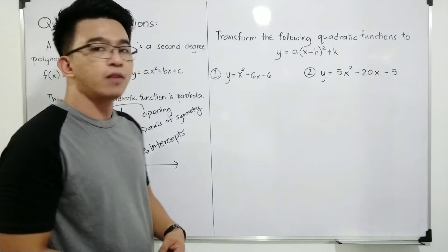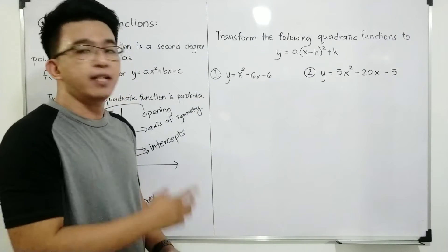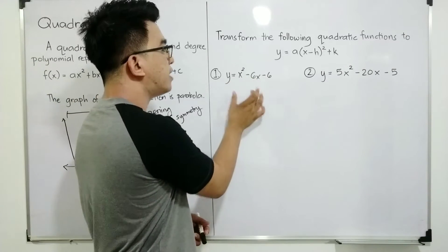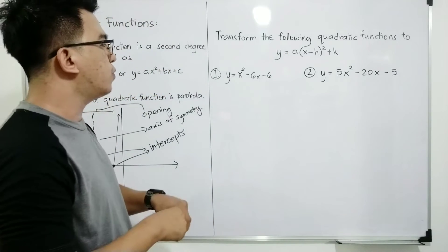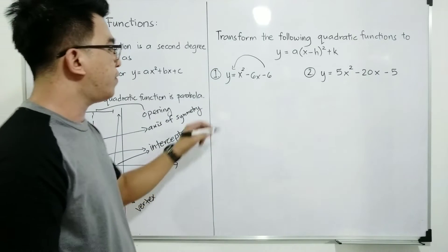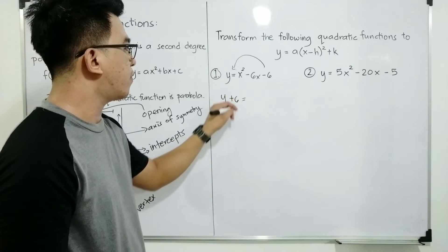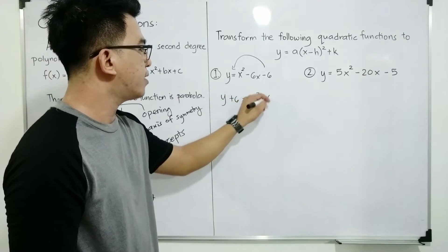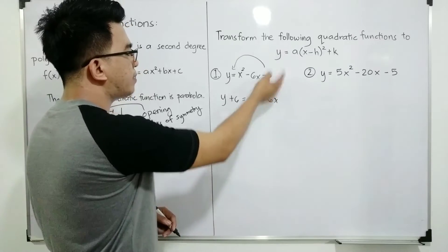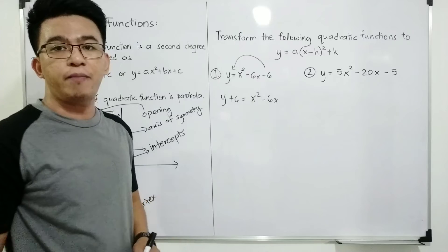So let's have item number one. We are given y is equal to x squared minus 6x minus 6. Our question here is how are we going to transform this function into this form? The first thing you need to do is to transpose negative 6 to the other side of the equation, and it will give you this kind of equation: y plus 6 is equal to x squared minus 6x. As you can see, the negative 6 was transposed from the right side to the left side of the equation, and from negative it became positive.